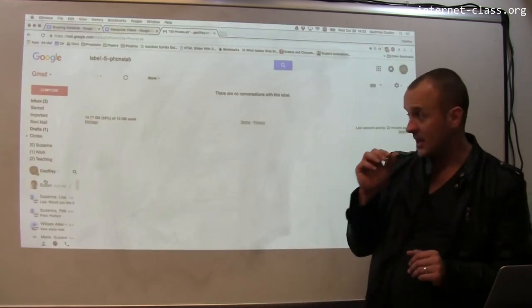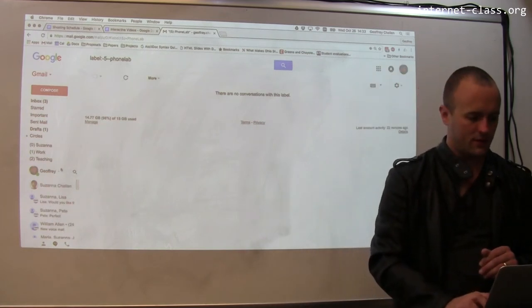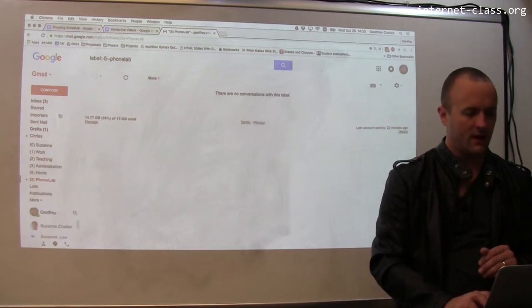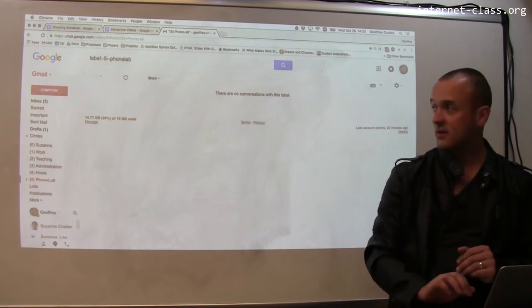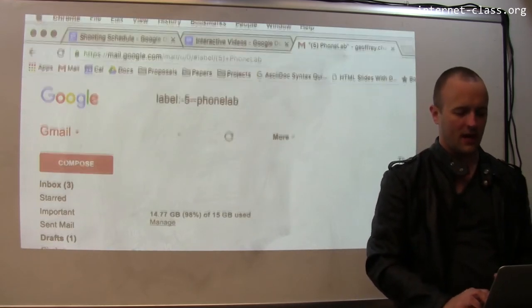So here's my email inbox, and I'm going to hopefully not divulge any sort of personal information about myself, but here's what I'm going to do. So I'm going to start by clicking Compose. Gmail is an example of a web application.